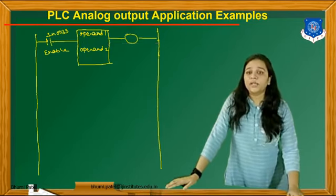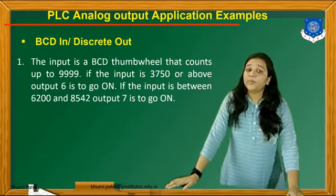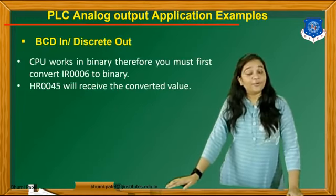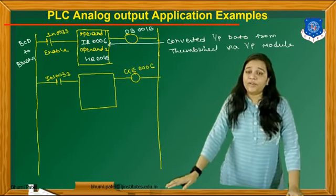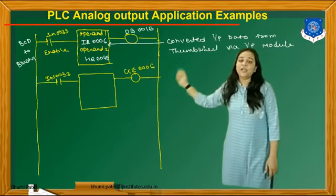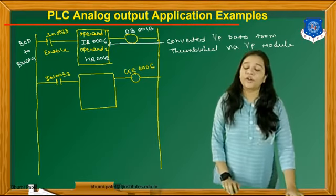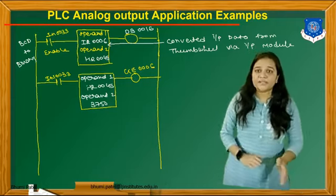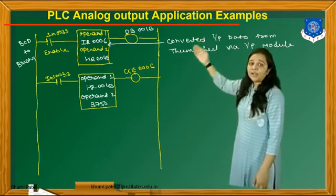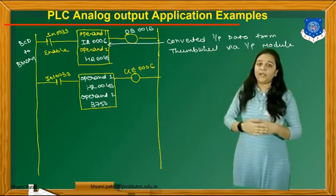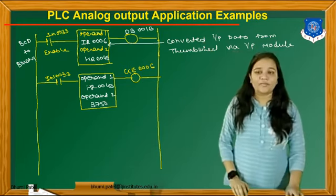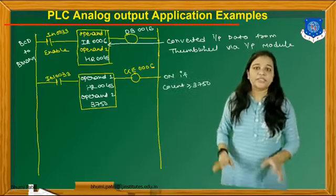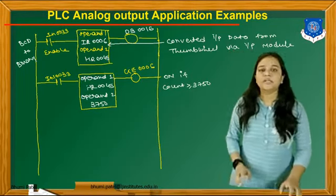The first condition: if the input is 3750 or above, output 6 goes ON. We use the greater-than-or-equal-to function (GE0006) with input IN0033. Operand 1 is HR0045 (the converted binary value) and operand 2 is 3750. If the count is greater than or equal to 3750, output 6 is ON.